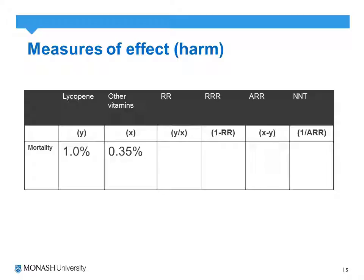With studies around harm, be it RCTs or cohort studies, outcomes are usually reported according to relative risk. In this hypothetical case we're looking at mortality from cancer, where some participants have been exposed to lycopene and others to a multivitamin. If we were to calculate our relative risk, we divide the risk in the exposed group by the risk in the control or comparison group. In this case we get a relative risk of 2.85.